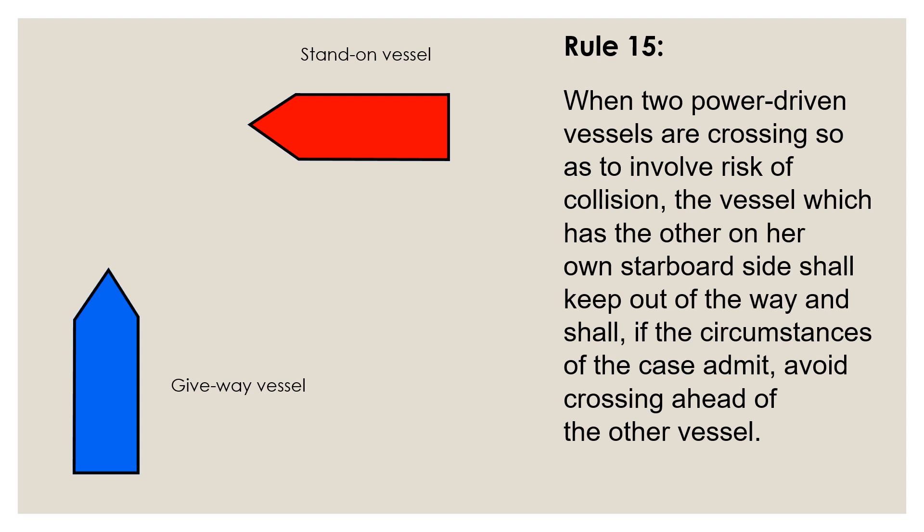Rule 15 requires the vessel that has the other on its starboard side to stay out of the way and to pass behind it. In this case, the vessel on the right that you see, the red vessel, becomes the stand-on vessel, and that stand-on vessel must follow Rule 17, which is action by stand-on vessel. The blue vessel that you see on your screen is the give-way vessel which has the other vessel on the right. This is the stand-on vessel, and it has to follow Rule 16, which is the action by give-way vessel, and we have got both these rules in my previous videos.